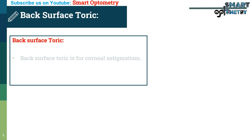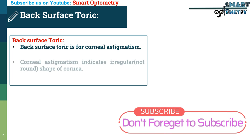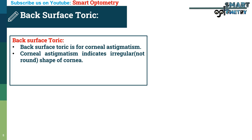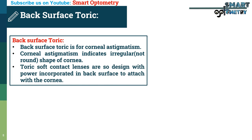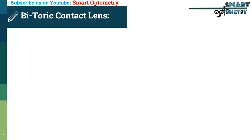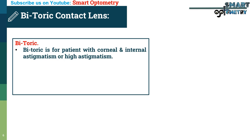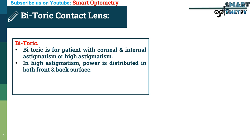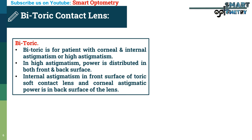Back surface toric is for corneal astigmatism. Corneal astigmatism indicates an irregular, non-round shape of the cornea. Toric soft contact lenses are designed with power incorporated in the back surface to conform to the cornea. Bitoric lenses are for patients with both corneal and internal astigmatism, or high astigmatism. In high astigmatism, power is distributed across both the front and back surfaces of the lens — internal astigmatic power in the front surface and corneal astigmatic power in the back surface.